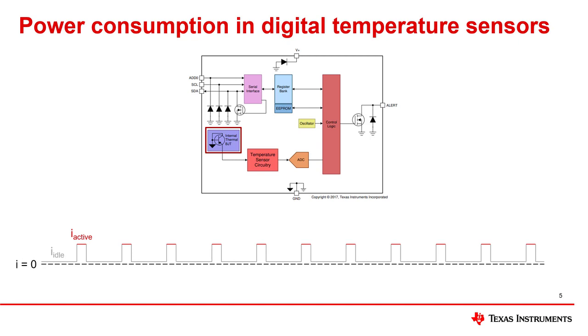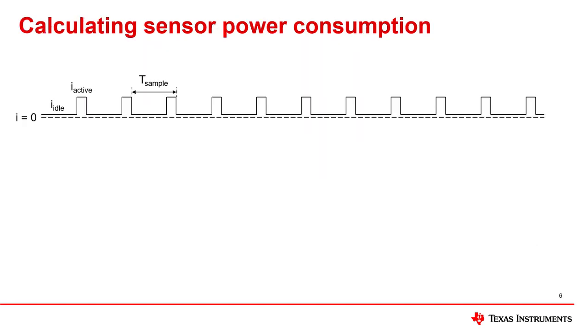By knowing the shape of these waveforms, it's possible to estimate your power consumption for any rate of sampling or device configuration. Let's take a look at the periodic current draw of a digital temperature sensor. The timing diagram here shows the current draw of a digital temperature sensor configured for regular temperature measurements. The two current levels, i-idle and i-active, that we discussed previously, repeat regularly over an interval called t-sample.